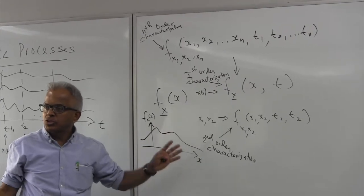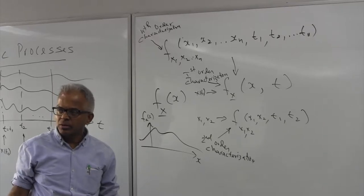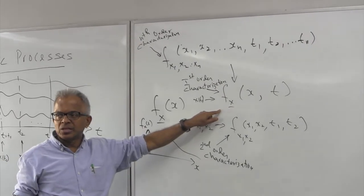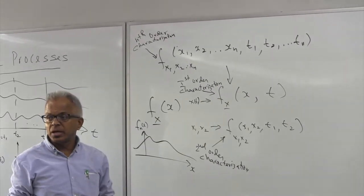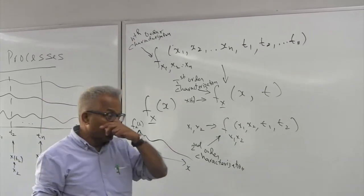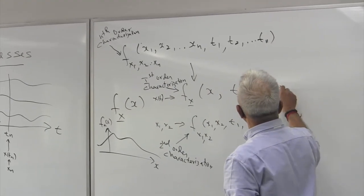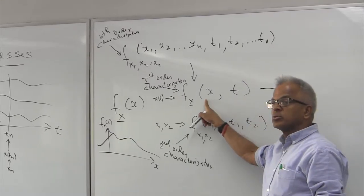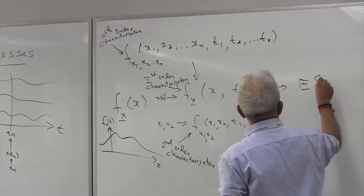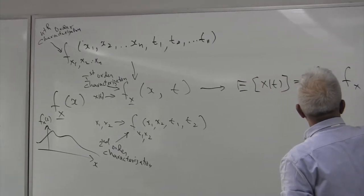If you have two random variables, the joint density function tells you everything about the random variables — there is nothing more. Similarly, if you are considering one time instant at a time, the complete information is contained in its density function, except the density function could be a function of time. If you have the density function you can also find out its mean and variance. The mean would be the expected value of that random variable, x of t, which is x multiplied by its density function — and in general this could be a function of time. We call this the mean of the stochastic process.